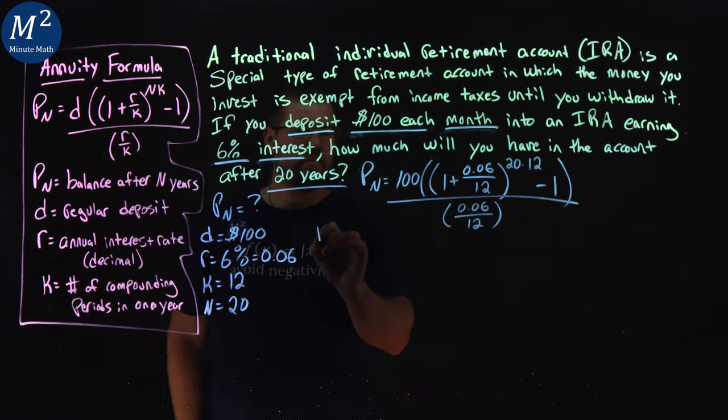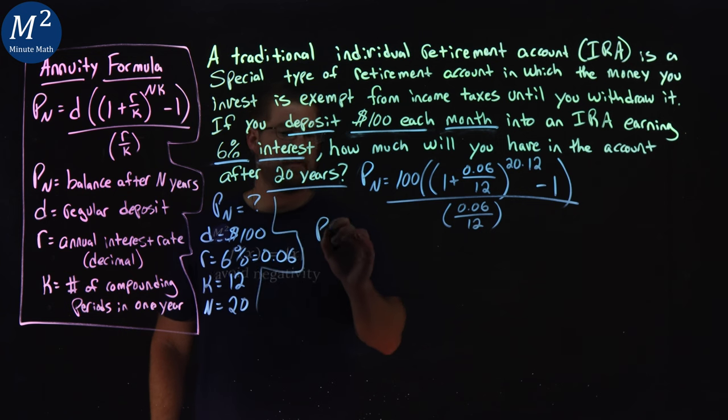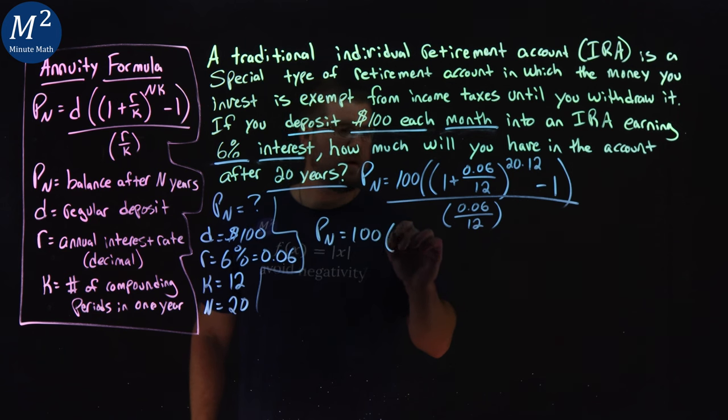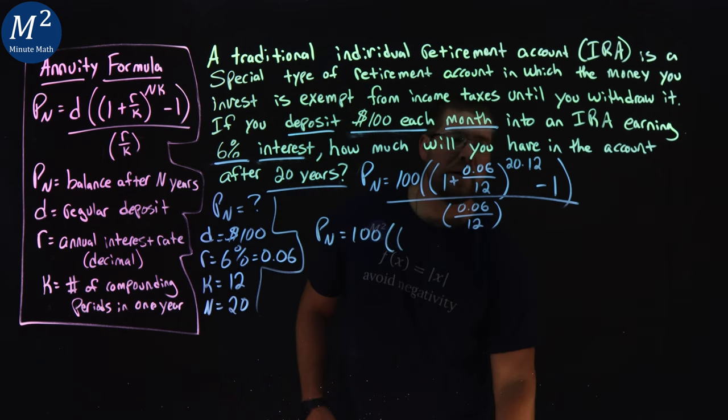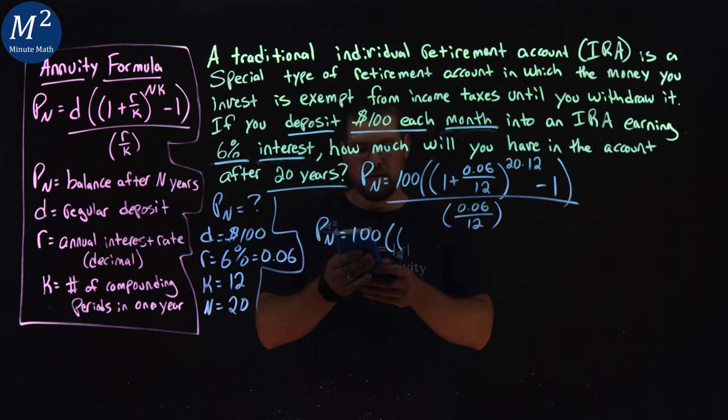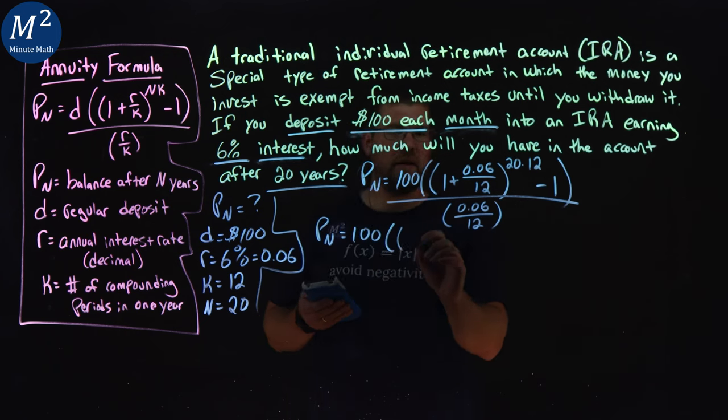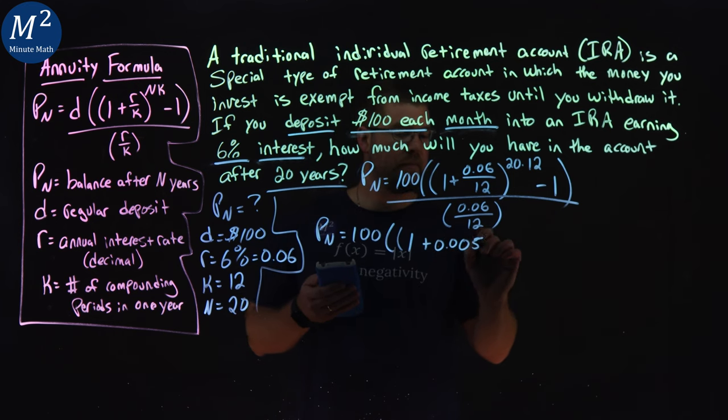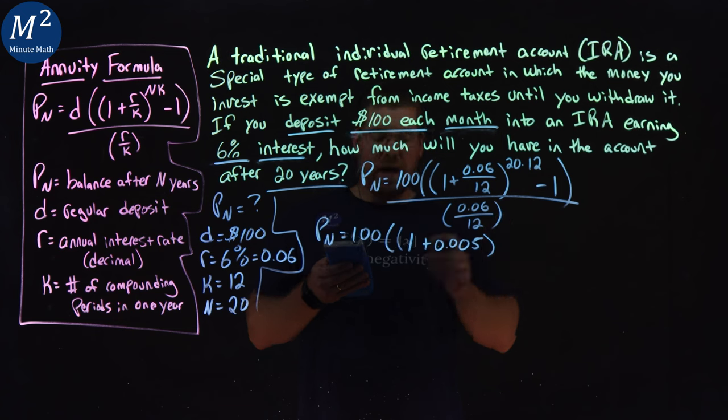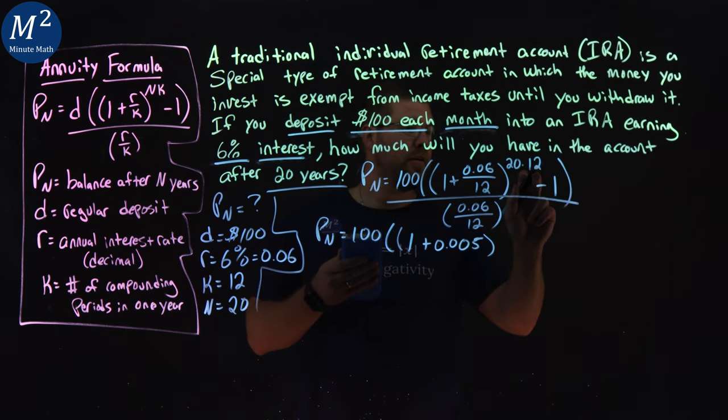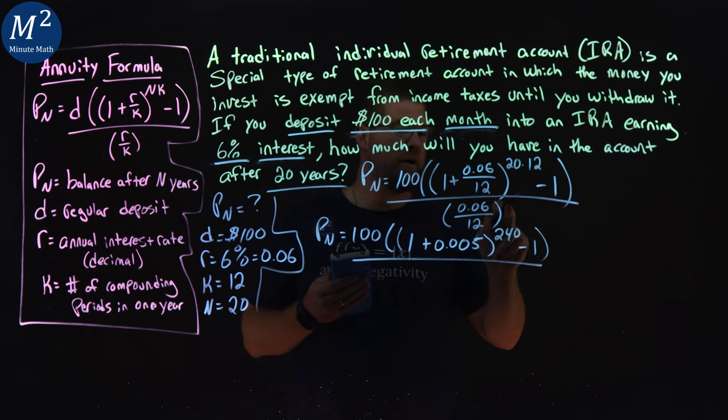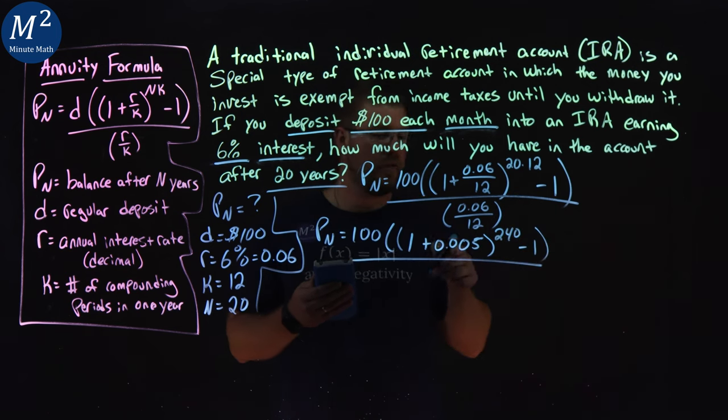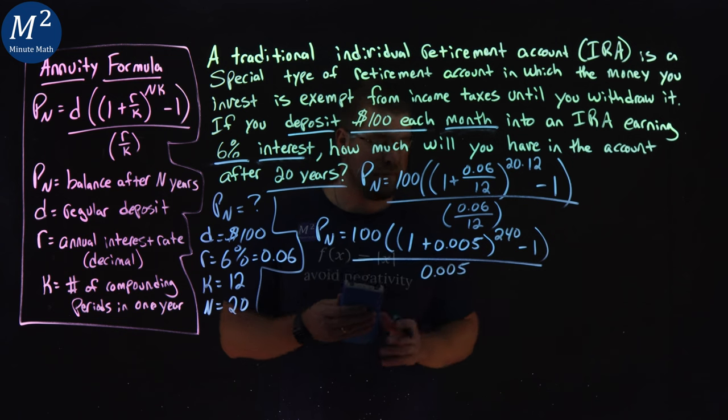So we have P sub n here. Let me separate these out. P sub n is equal to, I'm going to leave the 100 here, double parentheses, and 0.06 over 12, 0.06 divided by 12, is, we have 1 plus a 0.005, two zeros here, to the power of 20 times 12, right here, is 240, minus 1, over, and we already calculated, 0.06 over 12 is 0.005.